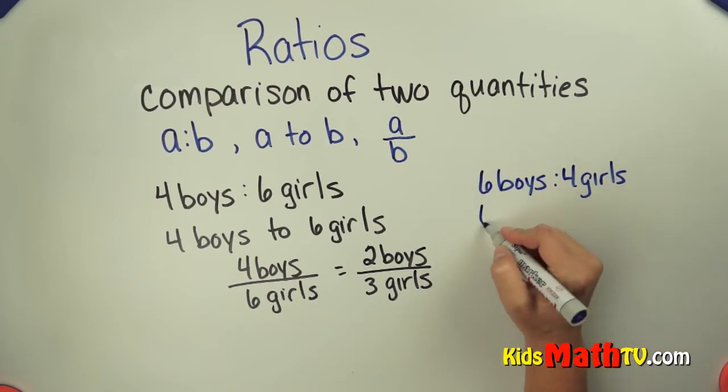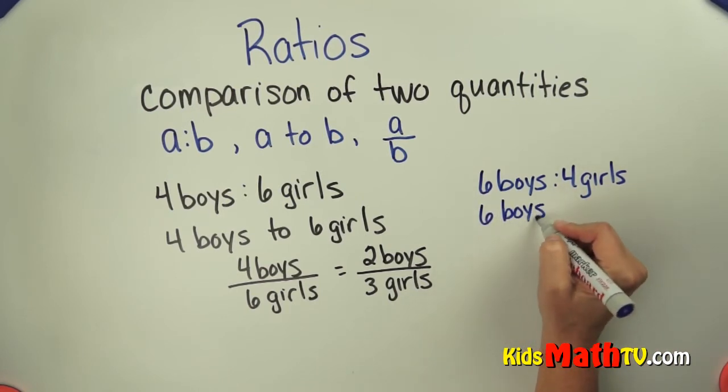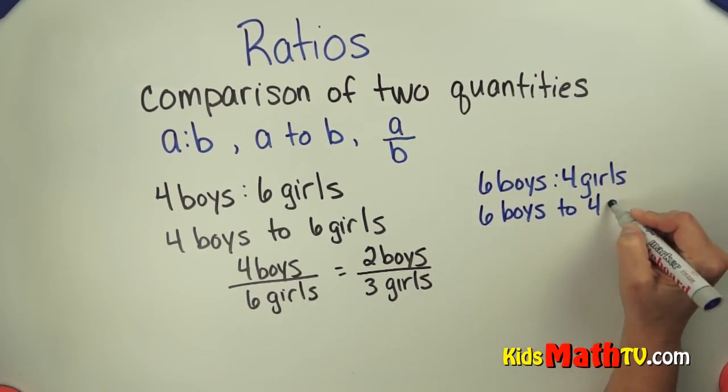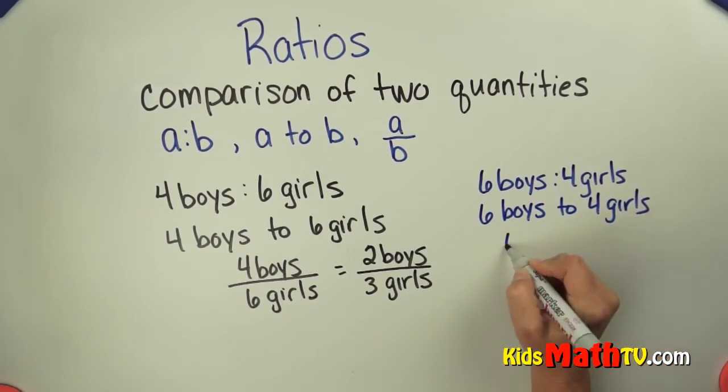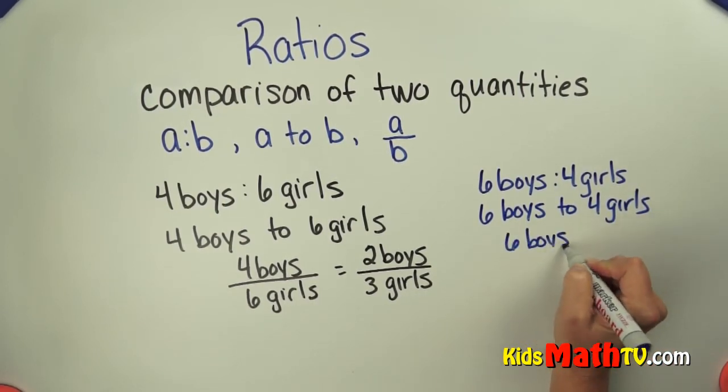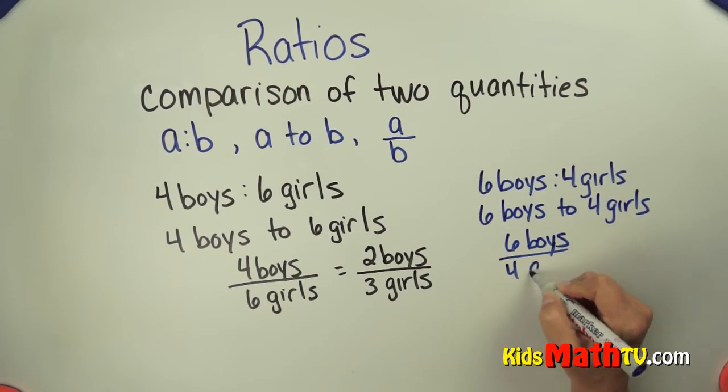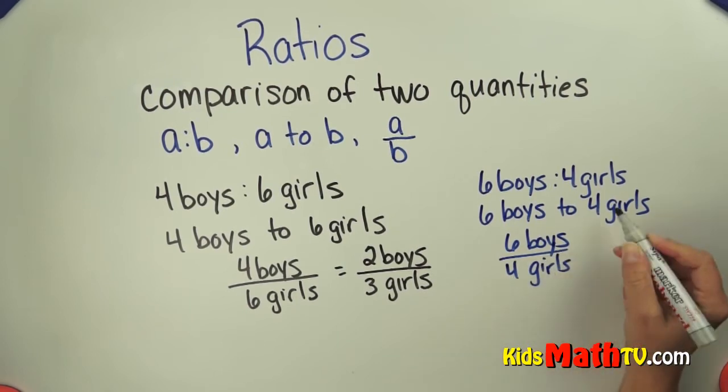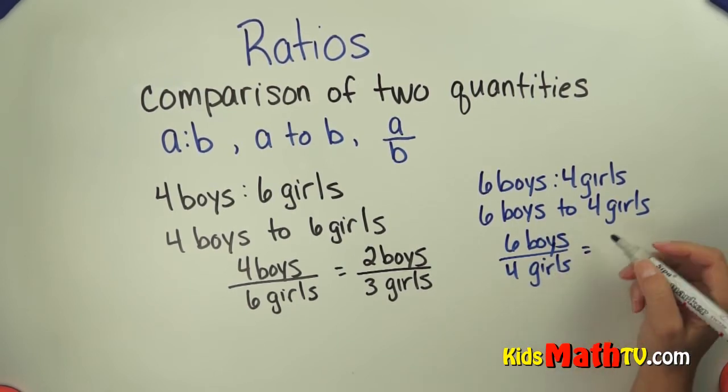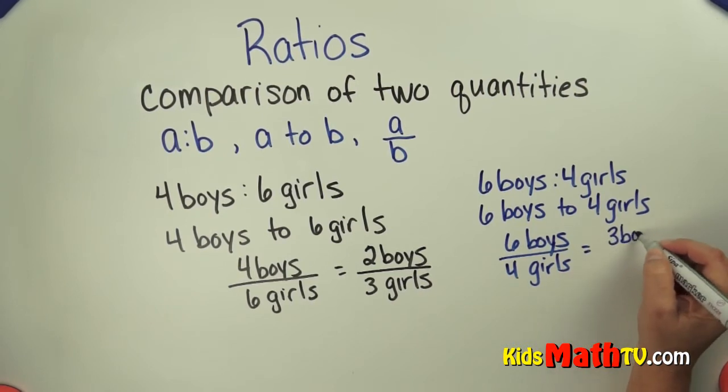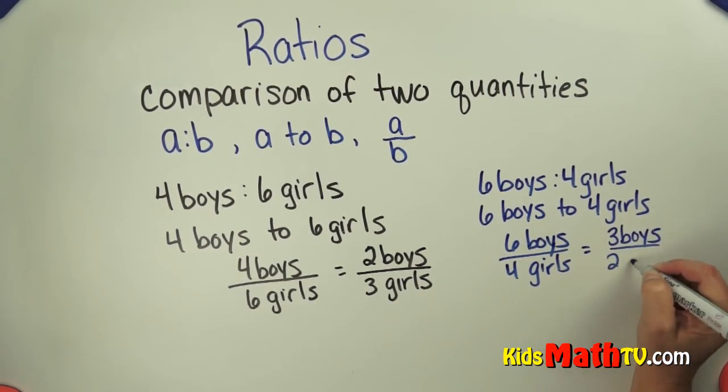So six girls to four boys, or as a fraction, six girls to four boys. And again we can reduce that down to three girls to two boys.